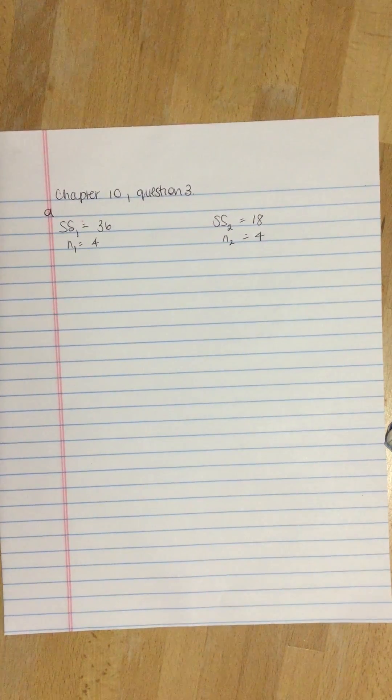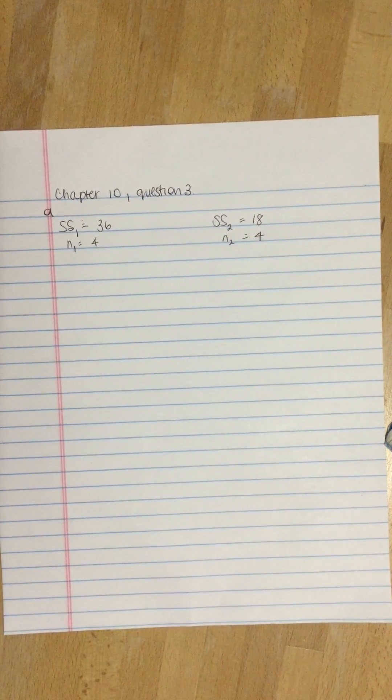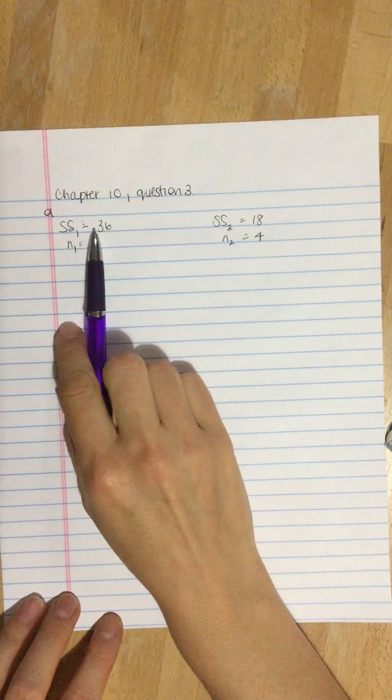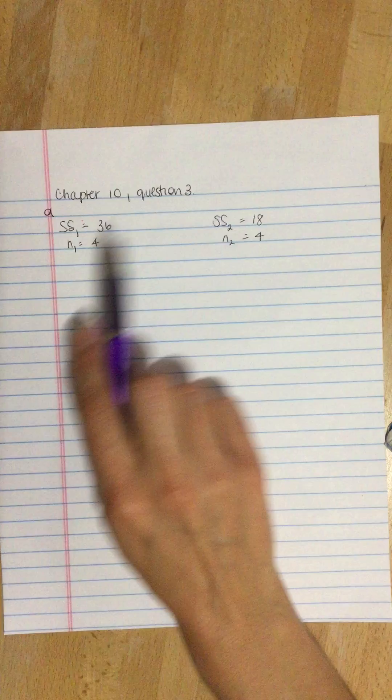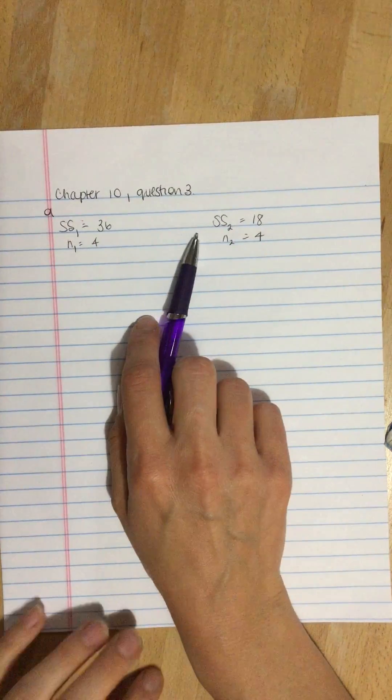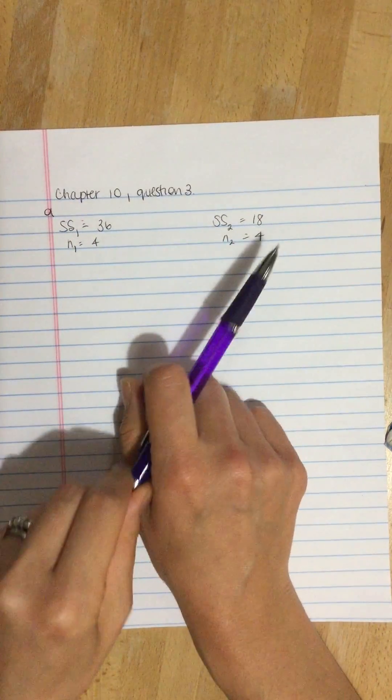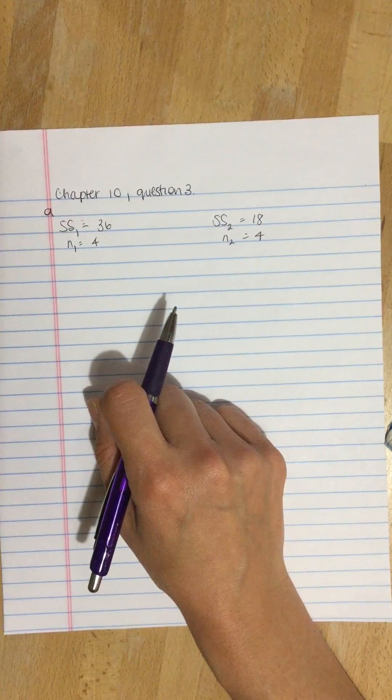Chapter 10, question 3. One sample has a sum of squares of 36, and the second sample has a sum of squares of 18. If n equals 4 for both samples, find each of the sample variances and compute the pooled variance.